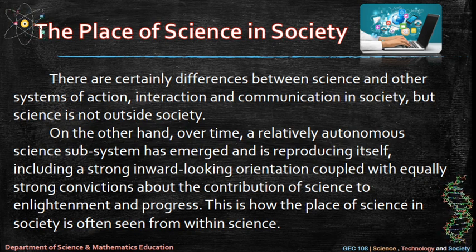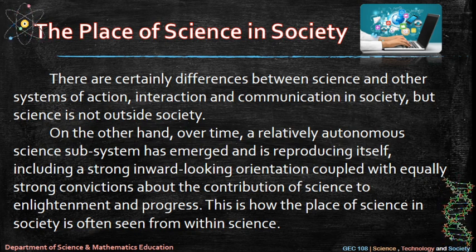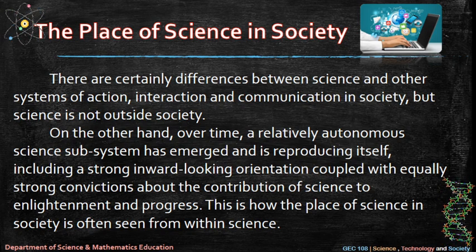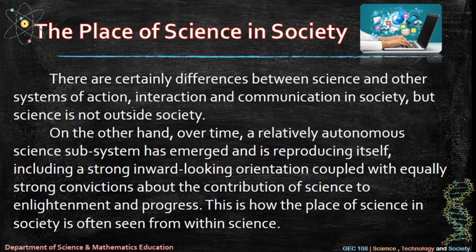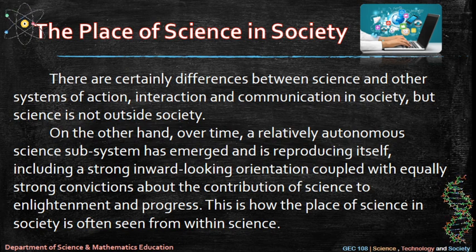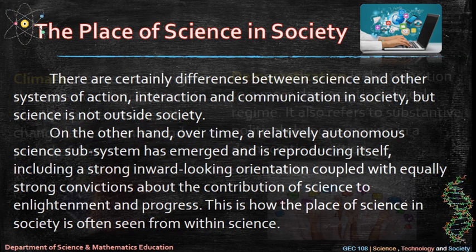Over time, a relatively autonomous science subsystem has emerged and is reproducing itself, including a strong inward-looking orientation coupled with equally strong convictions about the contribution of science to enlightenment and progress. This is how the place of science in society is often seen from within science.